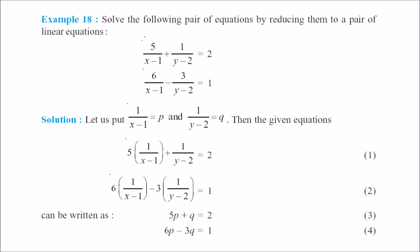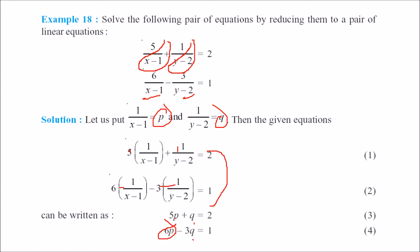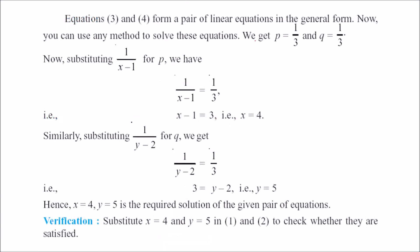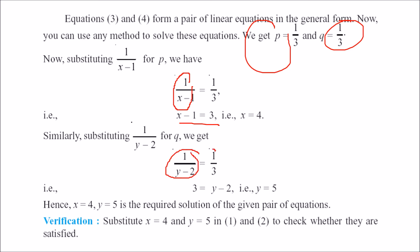One more example: reduce the equations by letting 1/(x minus 1) equal p and 1/(y minus 2) equal q. The equations become 5p plus q equals 2, and 6p minus 3q equals 1. Solving gives p equals 1/3 and q equals 1/3. Since 1/(x minus 1) equals 1/3, we get x equals 4; and since 1/(y minus 2) equals 1/3, we get y equals 5.